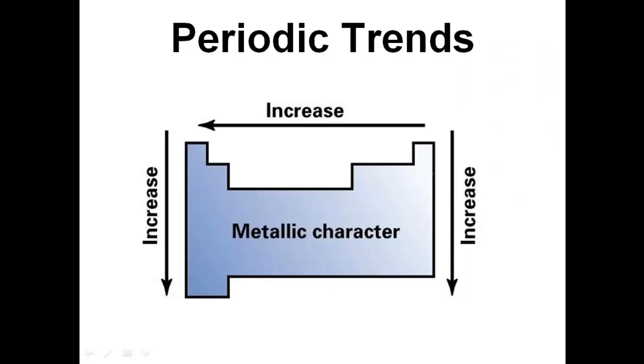The periodic trends we're learning is that my atoms become more metallic in character as I go from right to left across a period. And as I go down a group, I increase in my metallic character as well. The trend we're looking at is called metallic character. What characteristics do you have that are similar to metals? They all increase as they go this way and down a group.